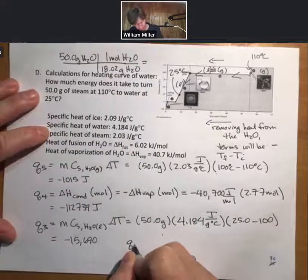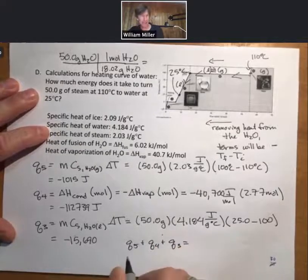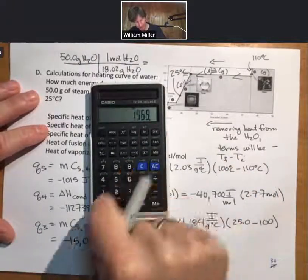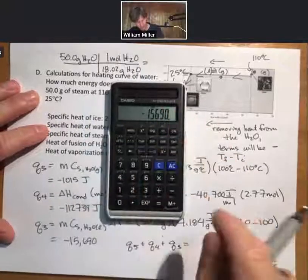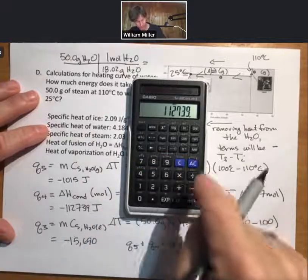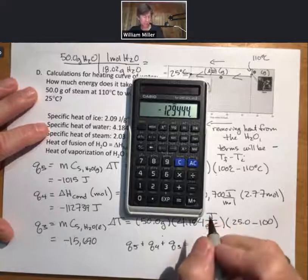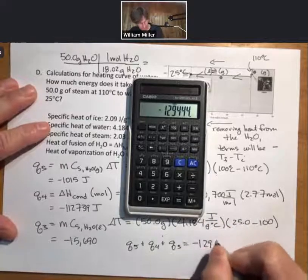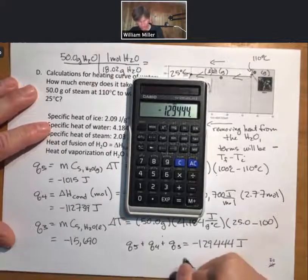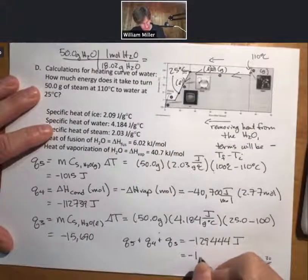Now how much energy does it take to turn 50 grams of steam at 110 degrees Celsius to water at 25 degrees Celsius? That's going to be Q5 plus Q4 plus Q3. Add them up: 15,690 minus, just to get my negative in there, 112,739 minus 1,015. I get minus 129,444 joules.